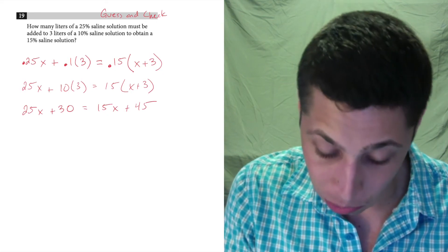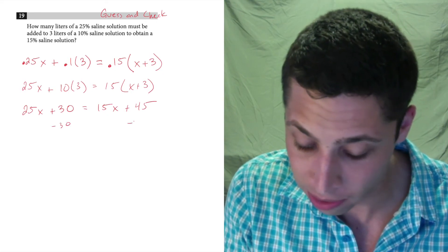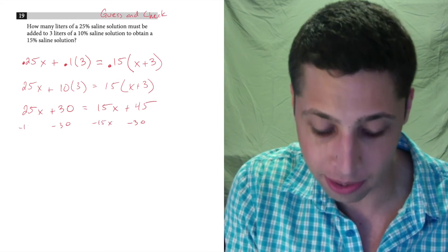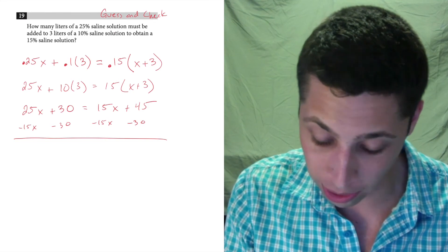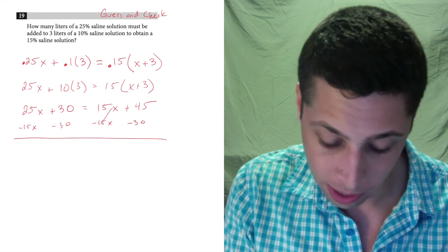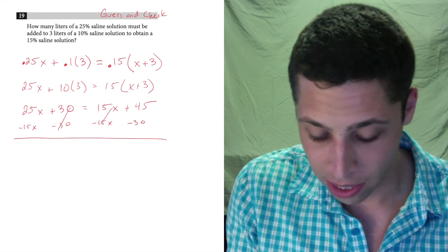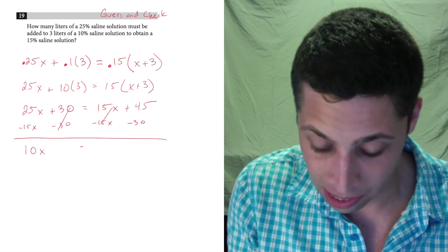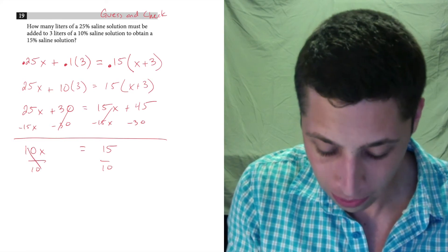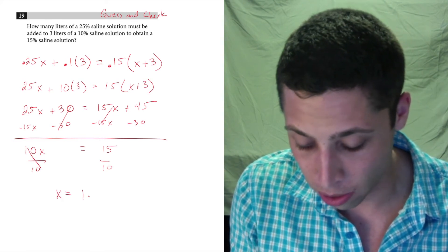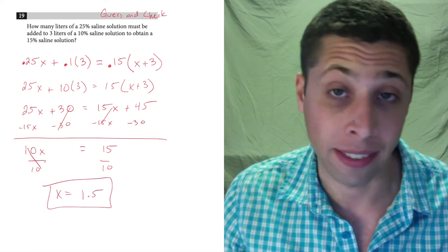So we're going to subtract 30 from both sides. At the same time, I'm going to subtract 15x. Notice how I write out all these steps because I'm afraid I do all this work and I lose a negative somewhere. That's kind of frustrating. So that's 10x is equal to 15. We divide by 10 and x is equal to 1.5. And that's the answer.